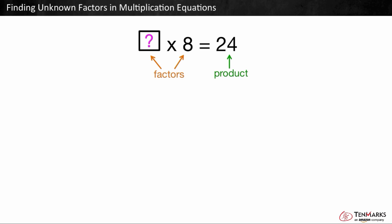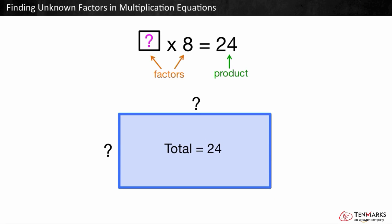A factor is missing. Something times 8 equals 24. Some number of equal groups of 8 equals 24. Let's make an array by using 24 tiles. If we keep making groups of 8, we can make a total of 24 tiles to find the missing factor.